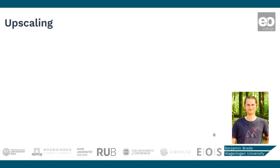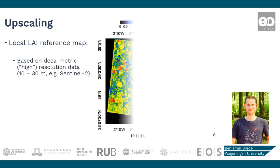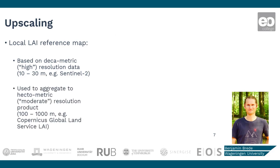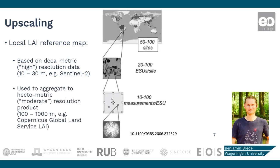Of course, a few single samples are not enough to make up a validation dataset. That is why in the next step a local LAI reference map will be produced. This map is based on decametric resolution data from, for example, Sentinel-2 data, and is calibrated with the single ESUs distributed over this area. In a global context, this local LAI reference map is then one among 50 to 100 sites. This number of sites is necessary to cover different biomes and vegetation structures. All these sites together can be used to validate hectometric scale LAI products like the Copernicus LAI layer.